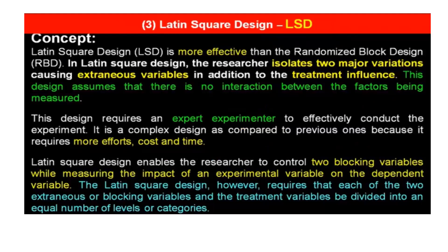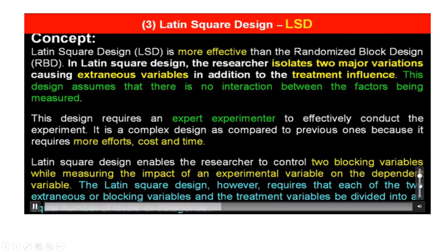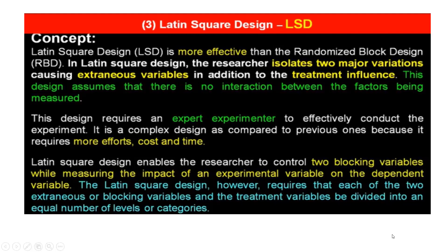Next is Latin square design. Latin square design is more effective than the randomized block design. In Latin square design, the researcher isolates two major variations causing extraneous variables in addition to the treatment influence. This design assumes there is no interaction between the factors being measured and requires an expert experimenter to effectively conduct the experiment. It is a complex design as compared to the previous ones because it requires more effort, post, and time.